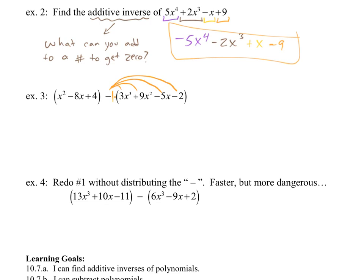So I'll recopy my first one down. So x² - 8x + 4. Because that's in front of the minus sign, the minus won't affect that at all.